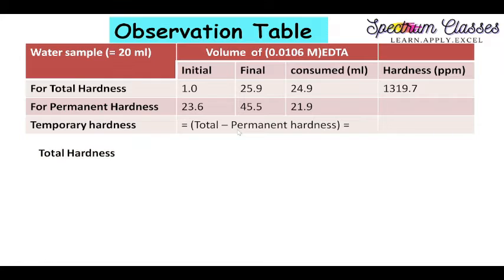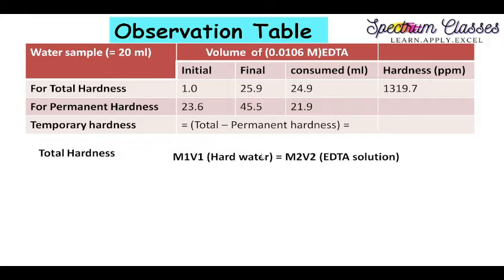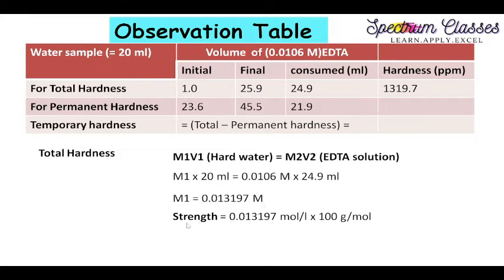Now we are going to do the calculation for total hardness, for which 24.9 ml of EDTA is consumed. I am going to apply the M1V1 = M2V2 molarity equation. On the left-hand side I have the hard water values and on the right-hand side I have the EDTA solution readings. So M1 multiplied by 20 ml equals 0.0106 multiplied by 24.9 ml. On solving, I get M1 equal to this value.